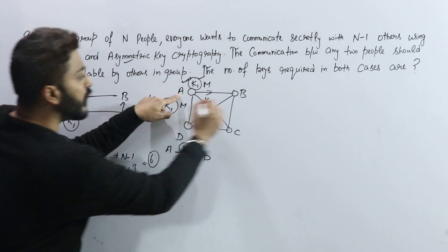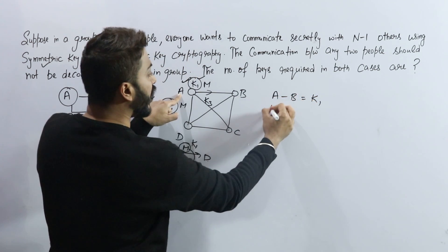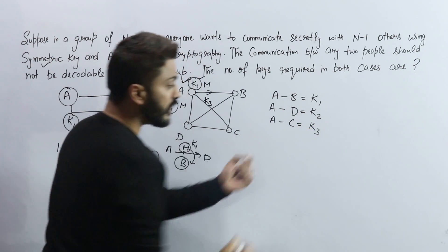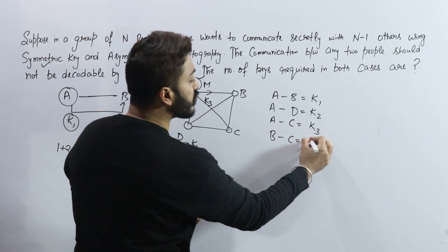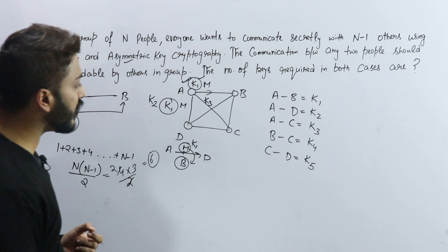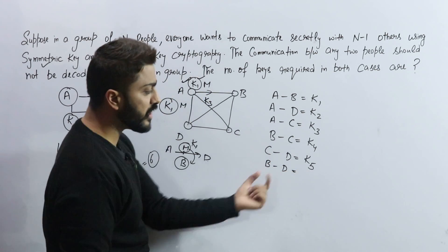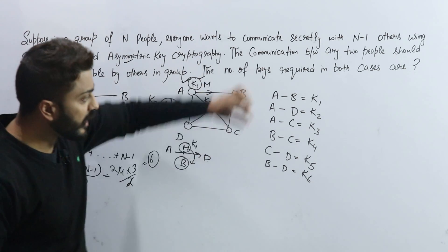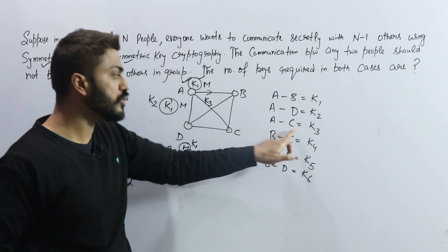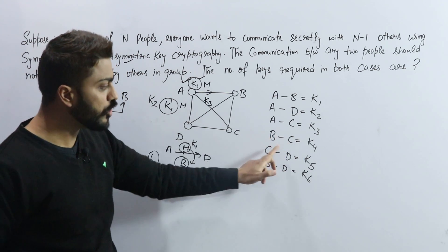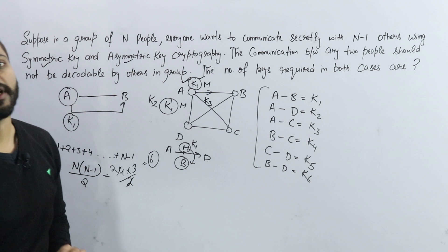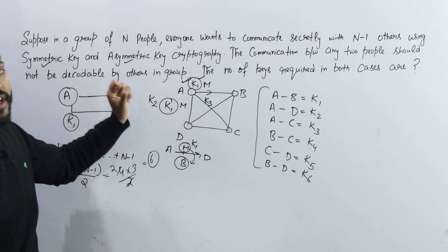For N=4, the 6 keys are: A–B use K1, A–D use K2, A–C use K3, B–C use K4, C–D use K5, and B–D use K6. Each pair shares one unique key, and since both parties in a pair can use the same key, the total is 6. This is how you solve this type of question for symmetric key cryptography.